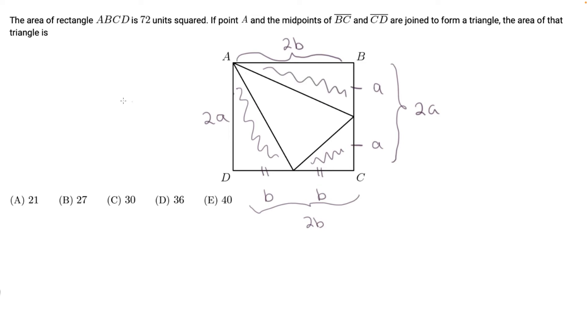The area of the rectangle is 2a times 2b, and the area is given as 72. If we multiply 2a and 2b, it's 4ab equals 72. So 72 divided by 4 is 18. So ab is 18.